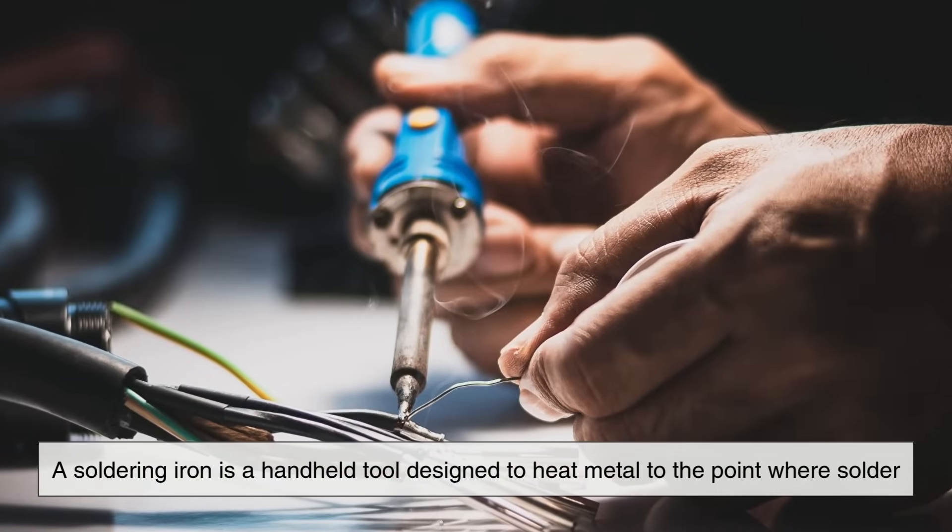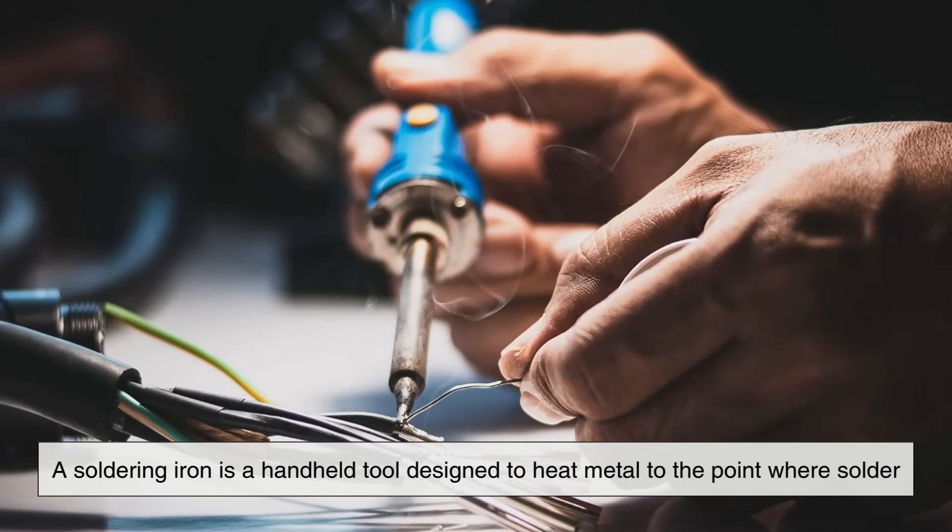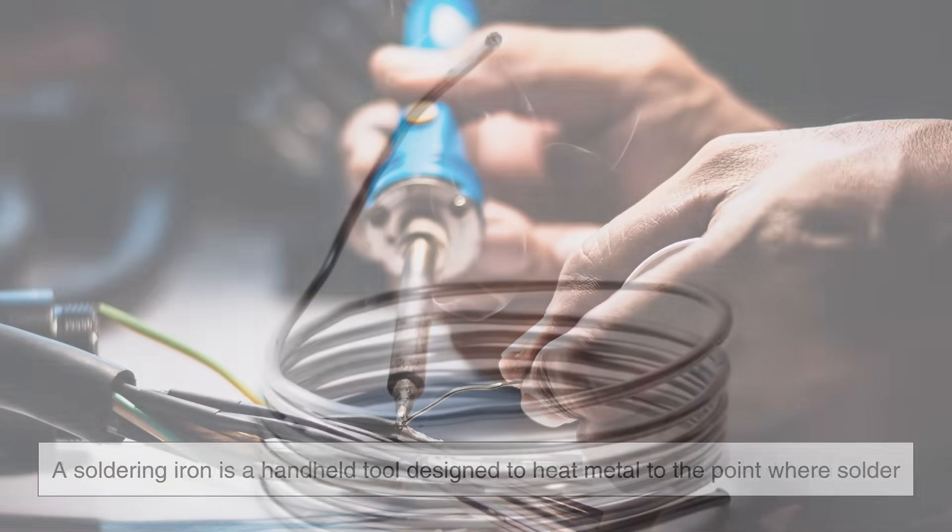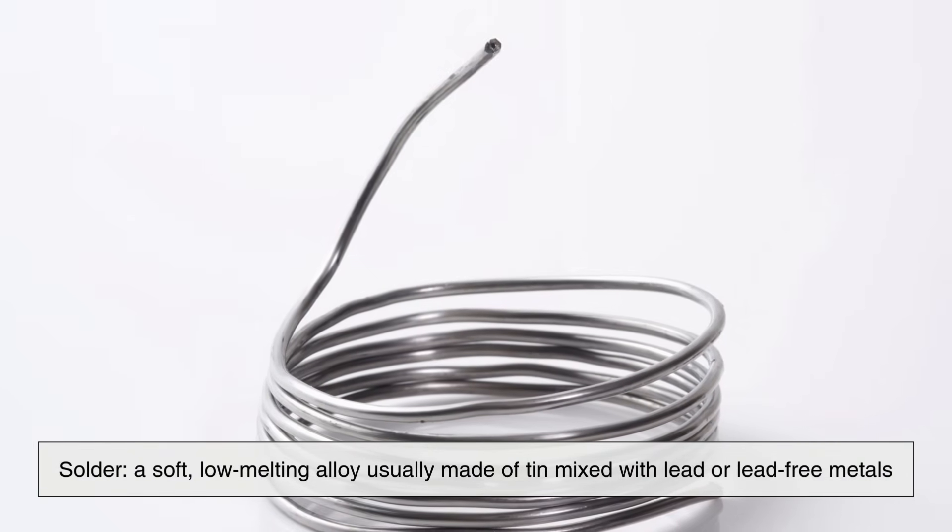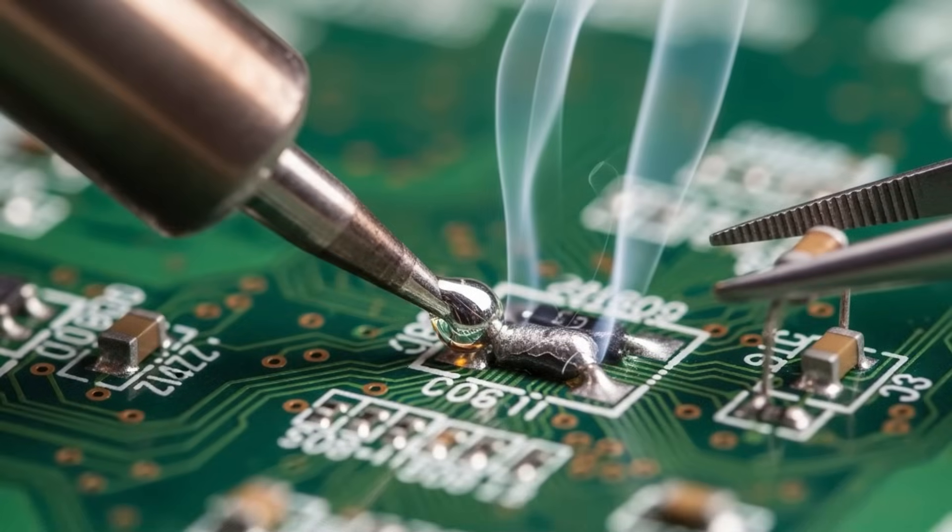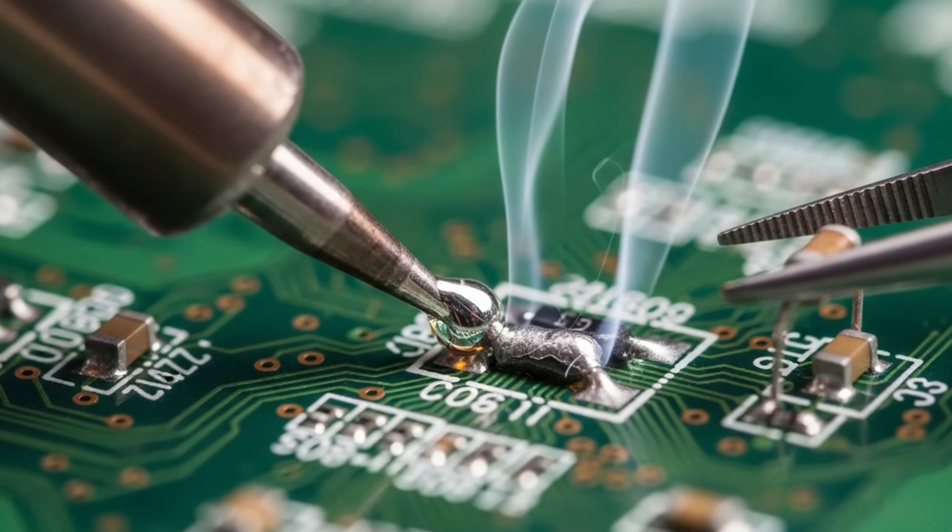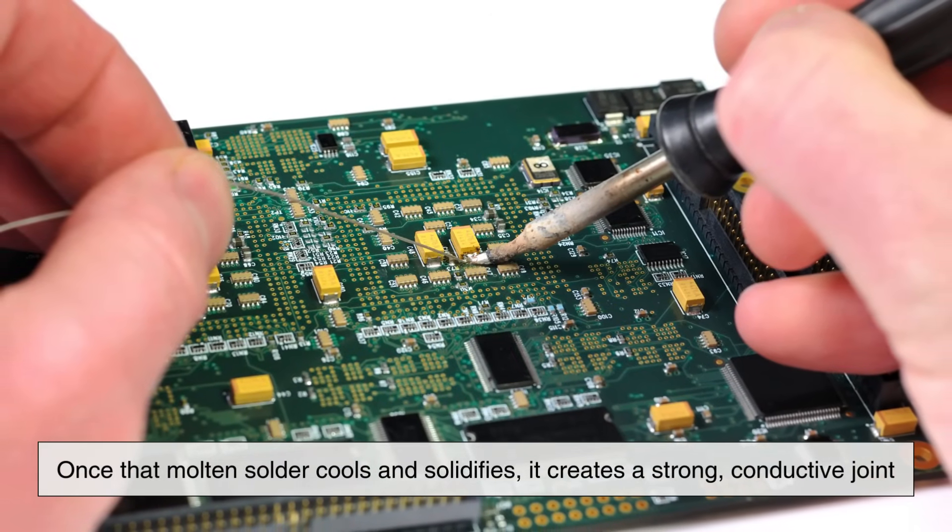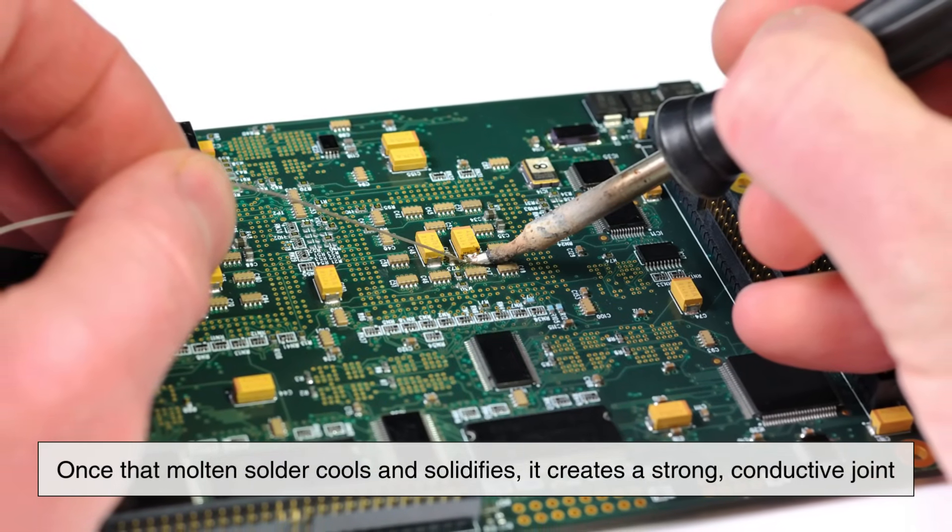A soldering iron is, at its core, a handheld tool designed to heat metal to the point where solder, a soft, low-melting alloy usually made of tin mixed with lead or lead-free metals, melts and flows between two components. Once that molten solder cools and solidifies, it creates a strong conductive joint.